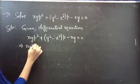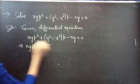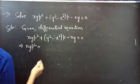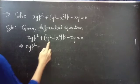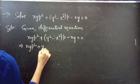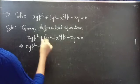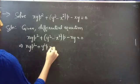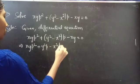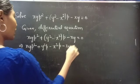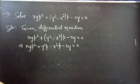Now we are going to factorize the given differential equation: x·y·p² + y²·p - x²·p - x·y = 0.